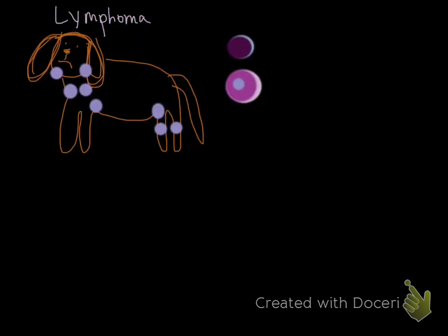Lymphoma is most often a disease of peripheral lymph nodes — that's the most common presentation. An animal may present because the owner notices lumps under the jaw or lumps all over the body, and the dog may be healthy or sick at diagnosis. Mandibular, prescapular, axillary, inguinal, and popliteal lymph nodes may all be noticed on physical exam.